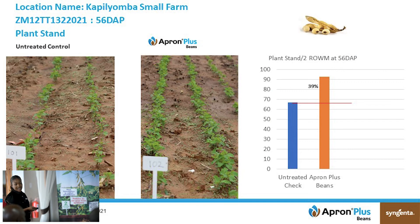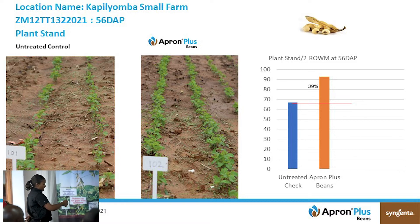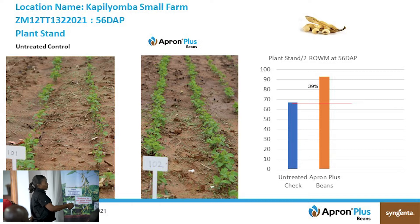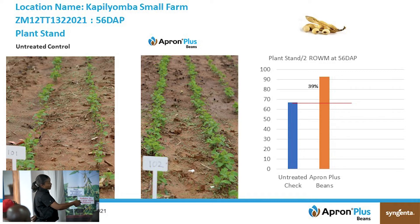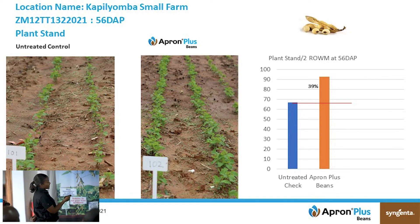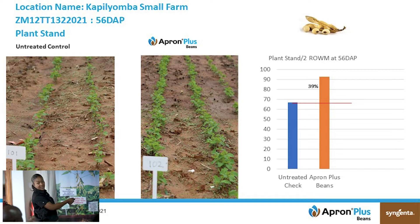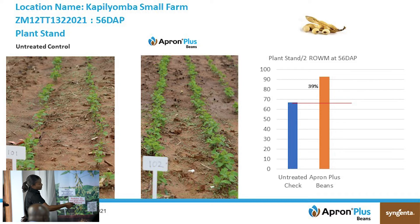These are local results, just to show that we also generate results locally. This plot is untreated — we did not treat the seed — and this plot was treated with Apron Plus Beans, using the same seed rate. The parameter we're looking at here is plant count. You can see that the plants that germinated in the treated plot were higher than in the untreated, with a 40% plant increment just by adding Apron Plus Beans.